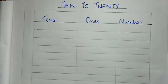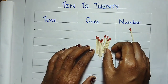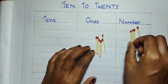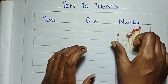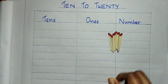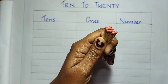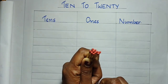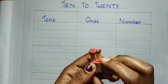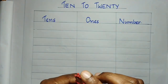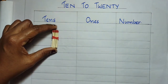Are you ready? Let us count the number of math sticks here. 1, 2, 3, 4, 5, 6, 7, 8, 9, 10. So, how many math sticks are here? 10 math sticks are here. So, I would like to tie it like this. The group of 10 math sticks is called a bundle. So, I am going to tie it using a rubber band. This is a bundle of 10 math sticks. I would like to place this in the 10s.